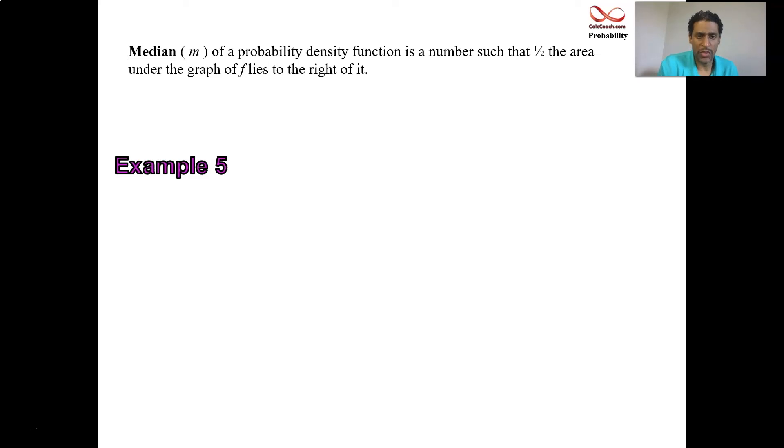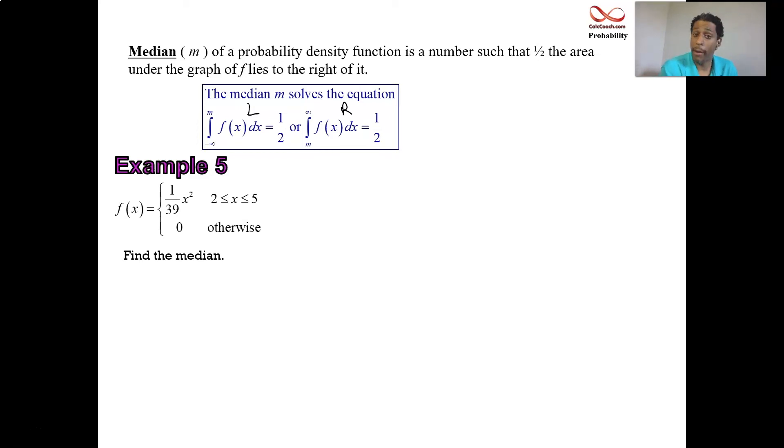The median is where you have half the area under the graph lies to the right of it and half the area under the graph lies to the left of it. It doesn't say that in the wording there, but this is the integral for the left, this is the integral for the right. And so just use the letter M to stand for it. In the last video, we had a second example where we had to calculate the constant k that made this particular function a probability density function. The k was one over 39. Now we can find the median of this particular function. Here's the graph. We're looking for the 50-50 split. The function is zero outside of two to five. In between two to five, half the area is going to be to the left of M and half the area is going to be to the right of M. Our job, find M.